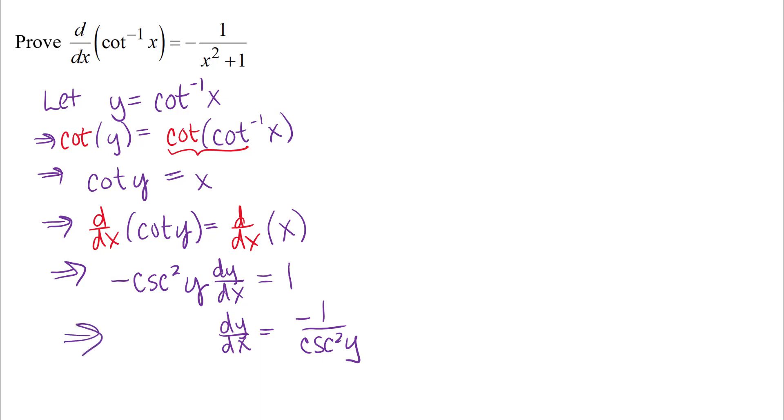All right, so when I divide through by negative cosecant squared of y, I'll get negative 1 over cosecant squared of y. All right, but I want my expression to be in terms of x here.